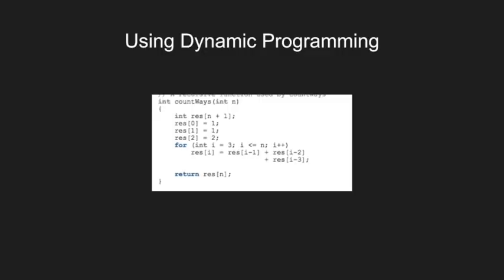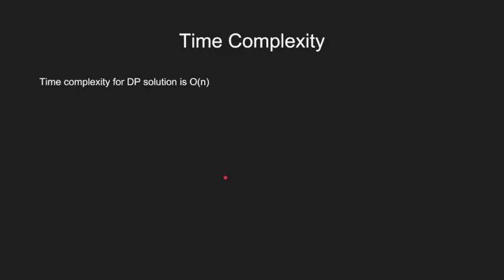Here is a dynamic programming solution to this problem in which we create an array and store values of 0, 1, and 2, and using a for loop we fill the rest of the array. In the end, we return the last element. We basically saved ourselves from calling the recursion over and over again and just stored the values that we need.